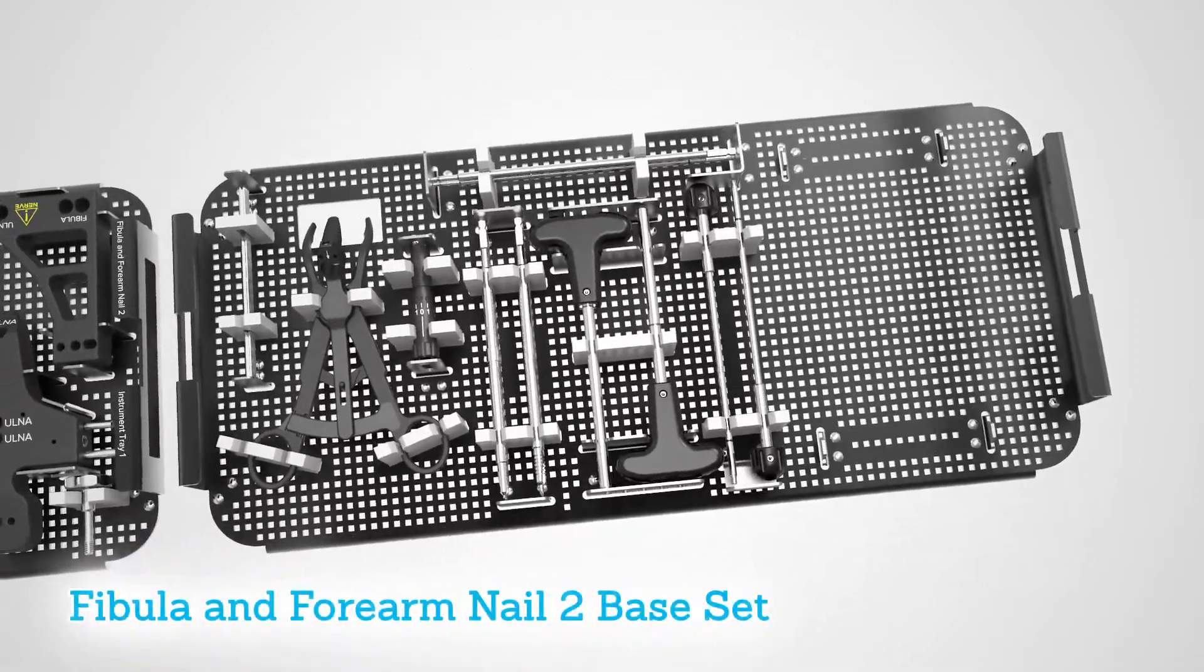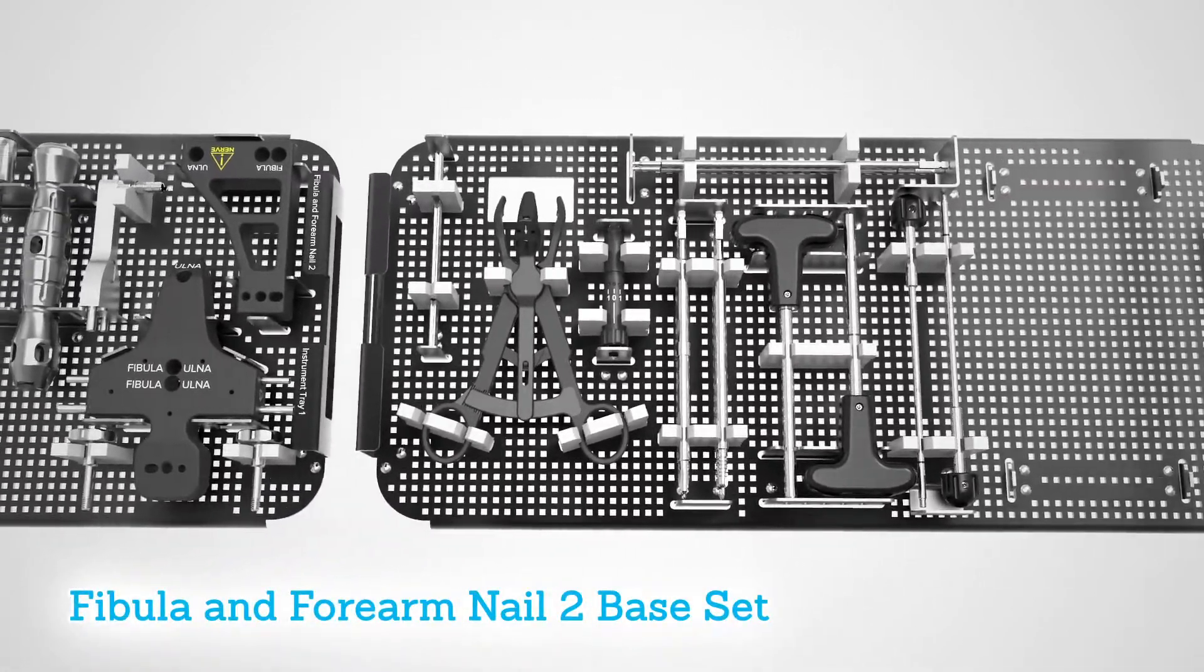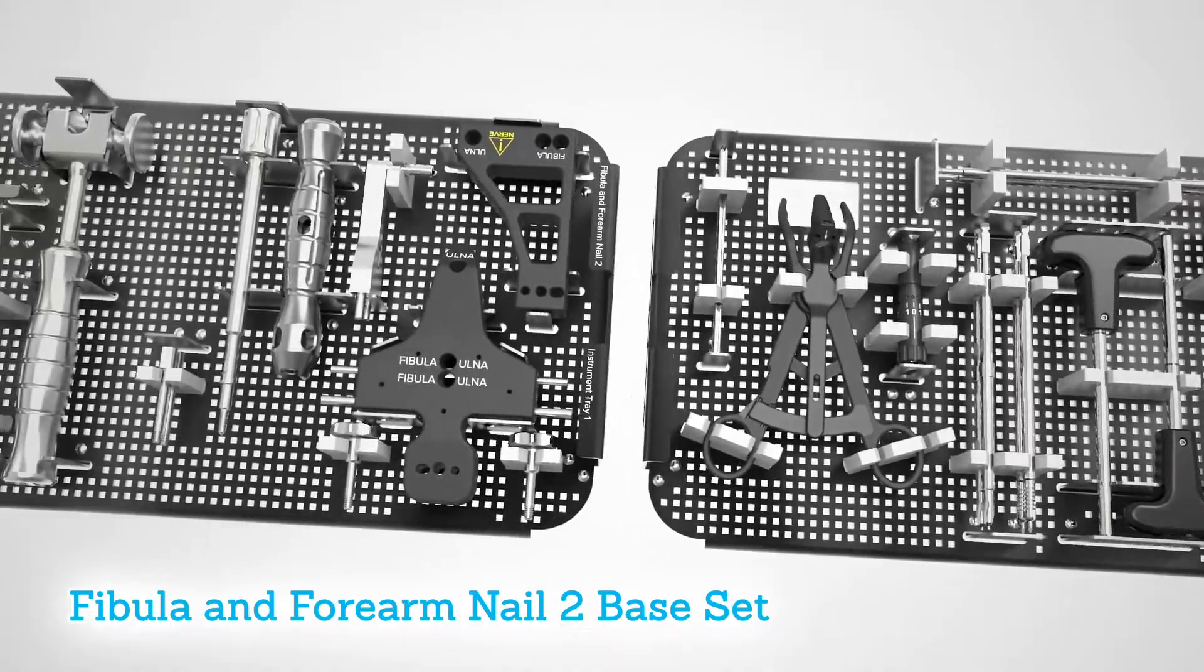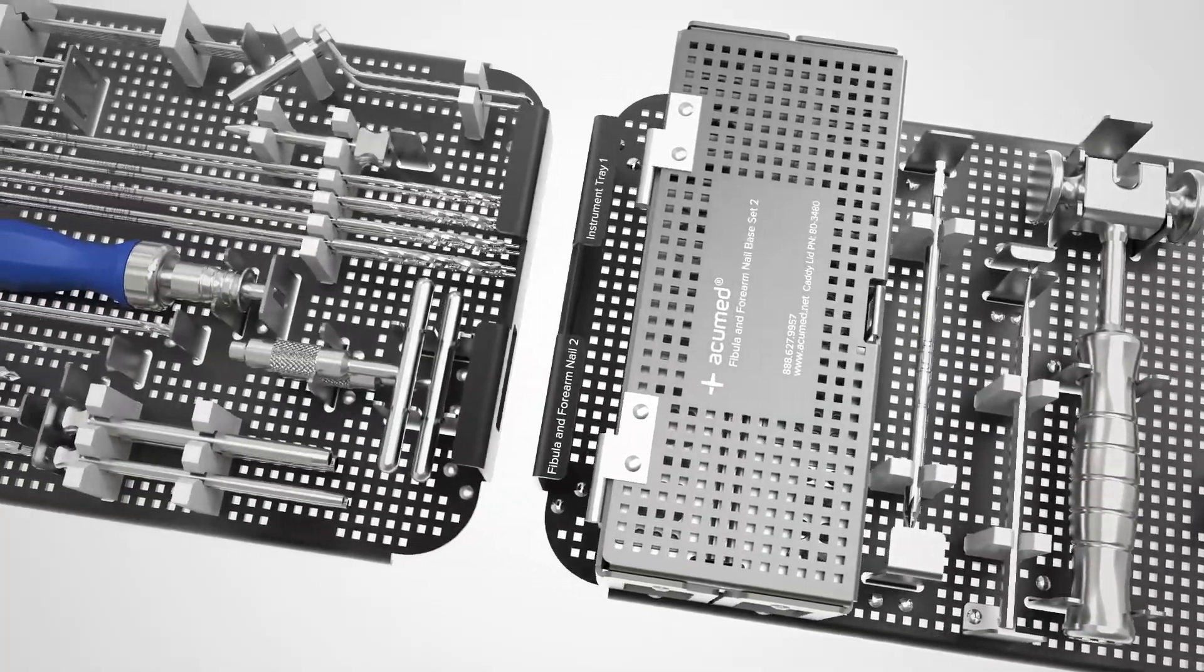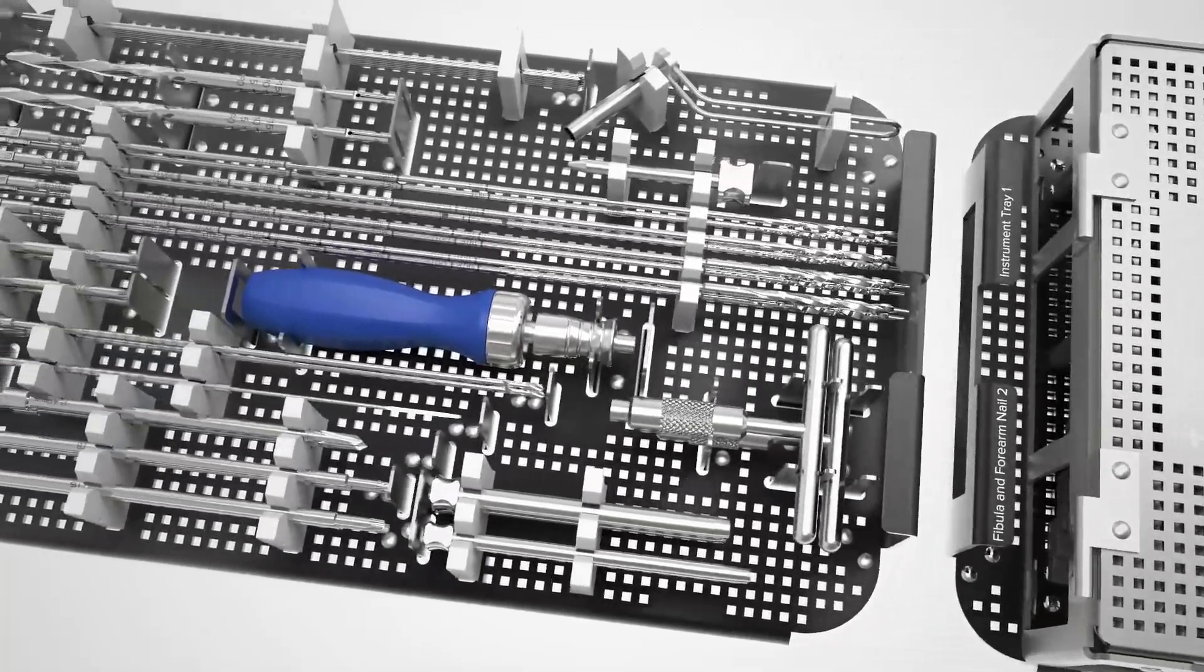The Fibula and Forearm Nail 2 Base Set is designed as a universal instrument set that supports implantation and removal of both fibula and ulna nails within the system, streamlining complementary surgical procedures.